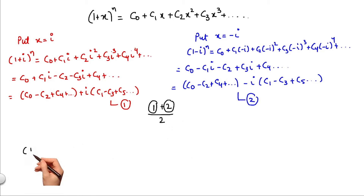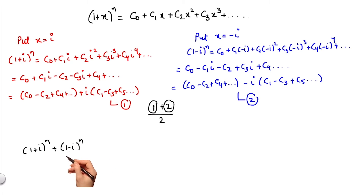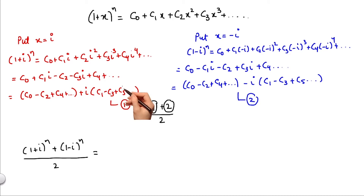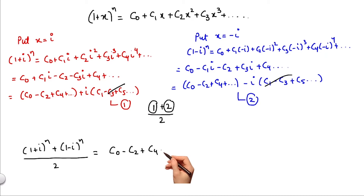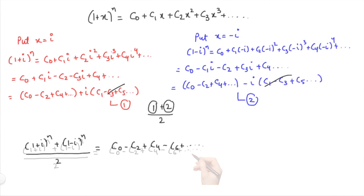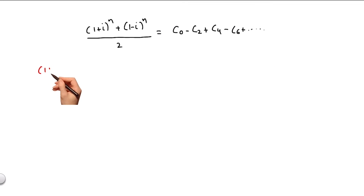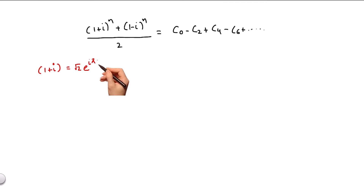We would have [(1+iota)^n + (1−iota)^n] ÷ 2 on the left-hand side. The imaginary parts cancel out, and on the right-hand side we get c0 − c2 + c4 − c6 and so on.